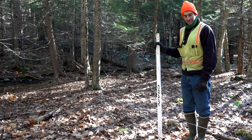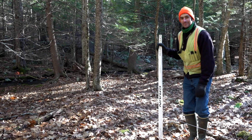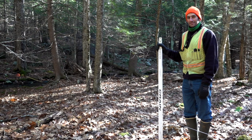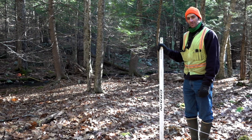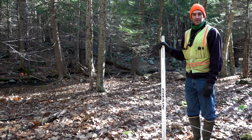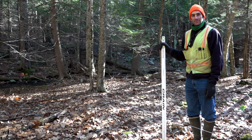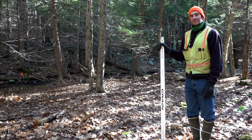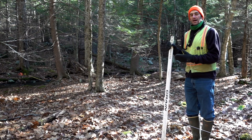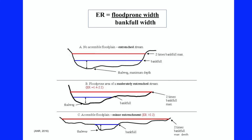We found the flood-prone width to be approximately 100 feet, and our bankful width was approximately 20 feet. So the entrenchment ratio is flood-prone divided by bankful width, which is approximately 5. In this setting, the river channel is non-entrenched. Anything greater than 2.2 is non-entrenched and able to spill out onto the floodplain and dissipate its energy.